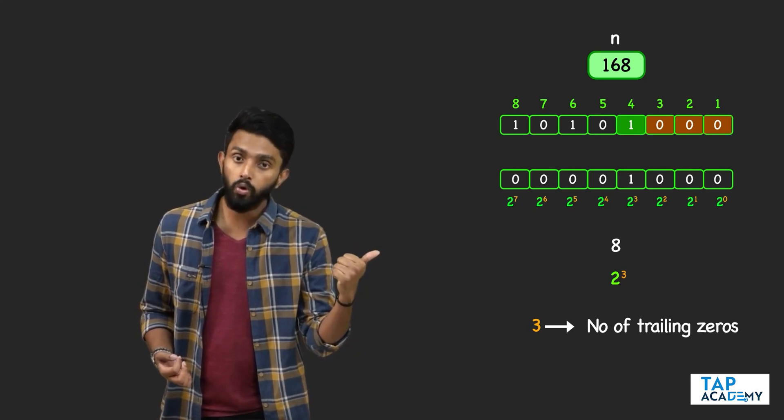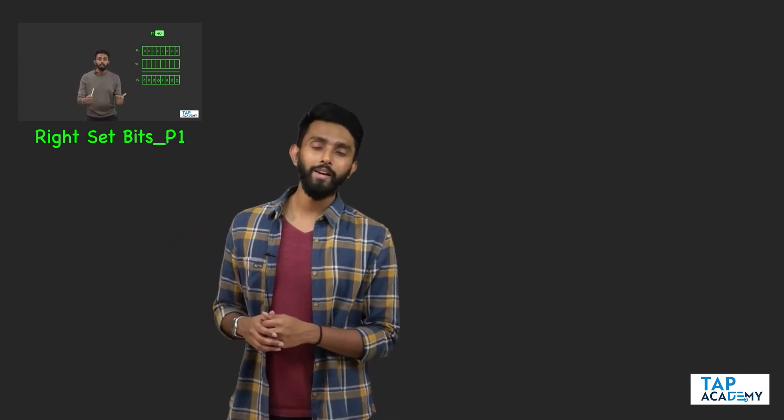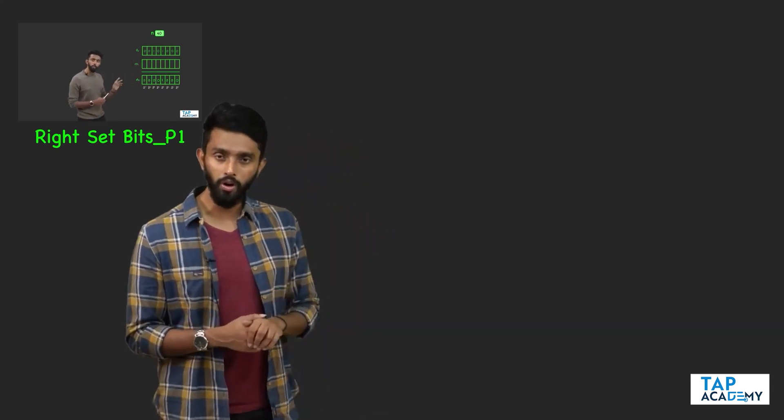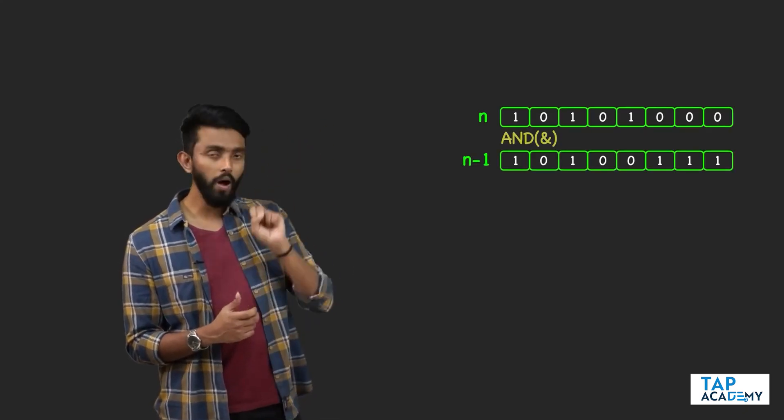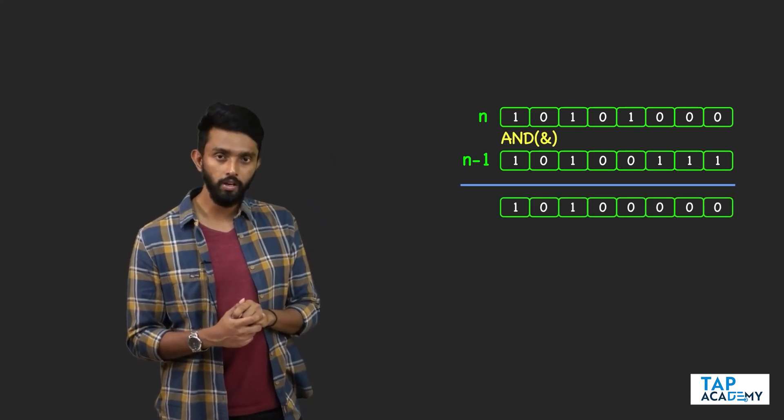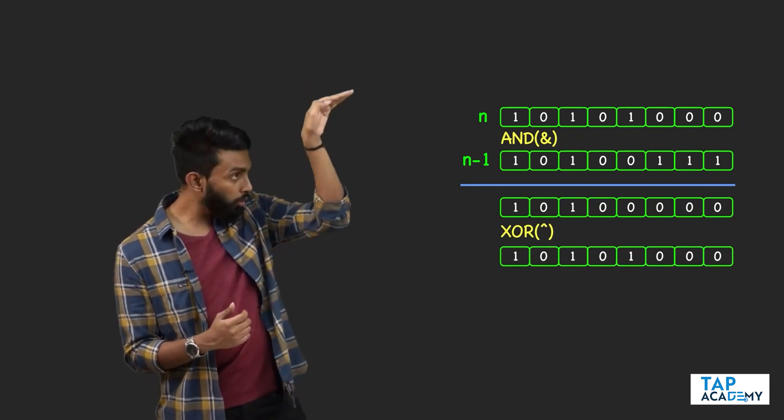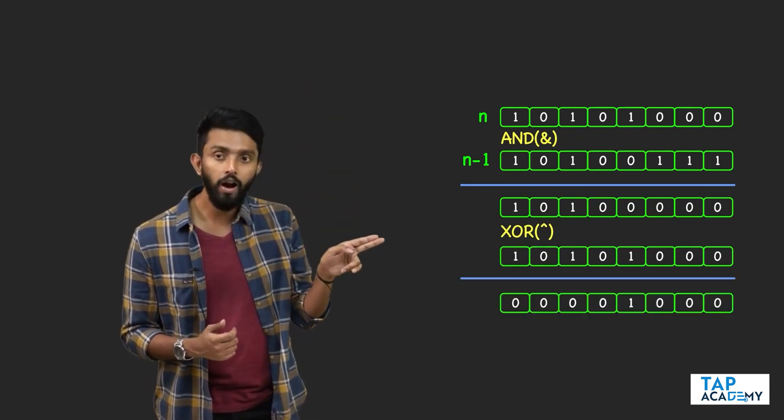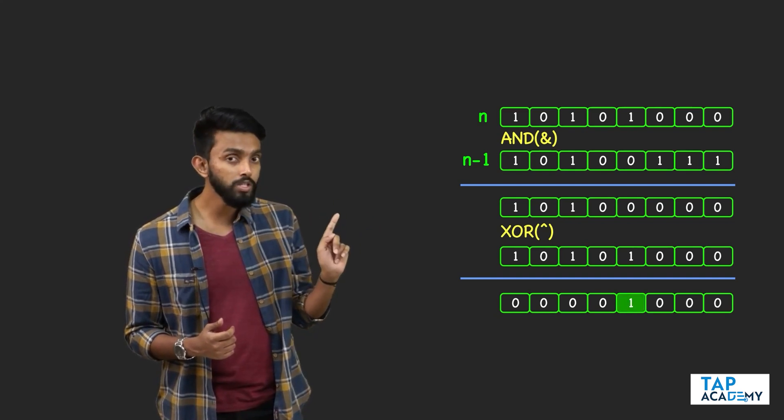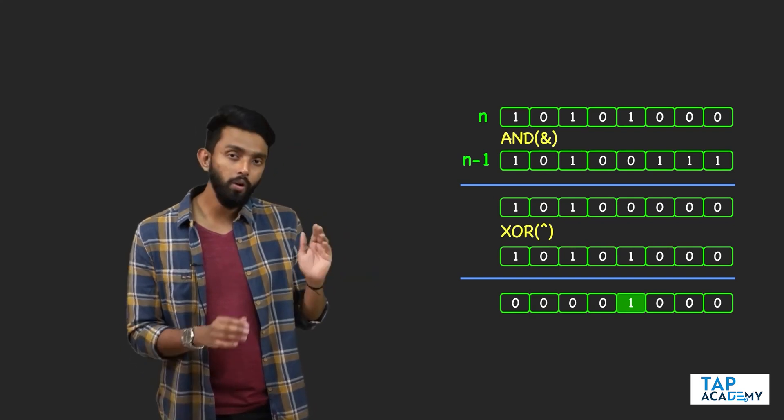Do you know how to isolate only the rightmost set bit? Yes, because in this video I have explained the same concept. You take n, then n minus 1, do AND. Whatever result you get, XOR it with the original number n. Then ultimately only the rightmost set bit will be preserved, everything else will be made zero.